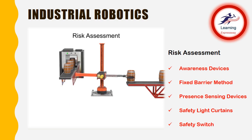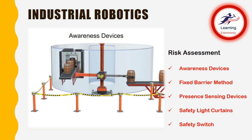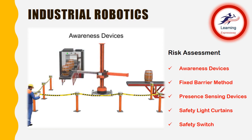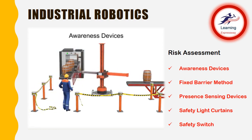Unauthorized access to the robot's work envelope can be hazardous to personnel. Several methods can be used to protect the work envelope. The simplest are known as awareness devices. These devices are only intended to define the work envelope and make personnel aware of the hazards. They do not prevent access and usually consist of small fences or roped-off areas.